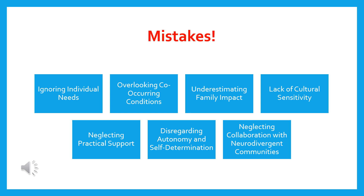The next common mistake is neglecting practical support. While celebrating neurodivergent traits and promoting acceptance, it's really important not to overlook the practical support that may be necessary. In addition to emotional support, neurodivergent individuals and their families may benefit from assistance with access to services, accommodations, therapies, and community resources that can enhance their well-being.